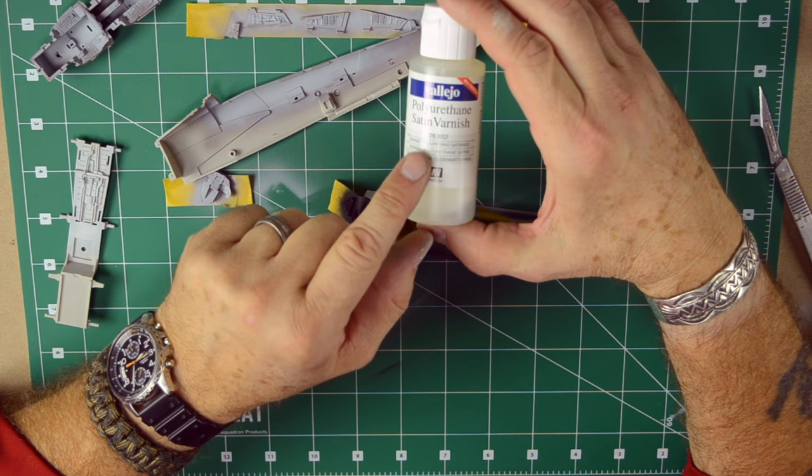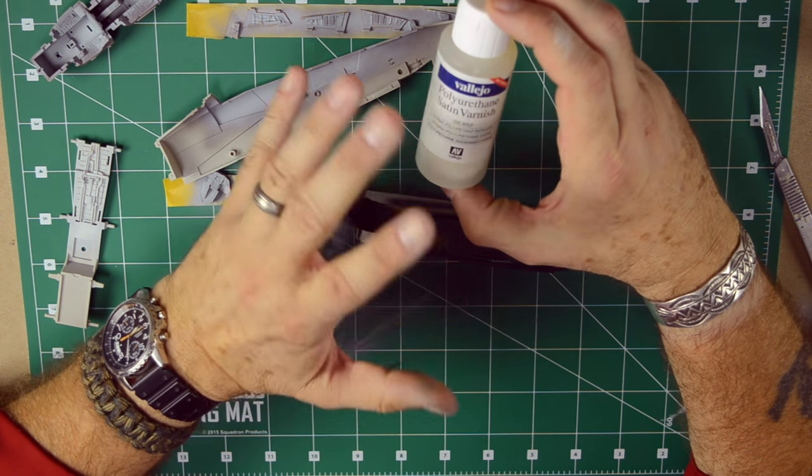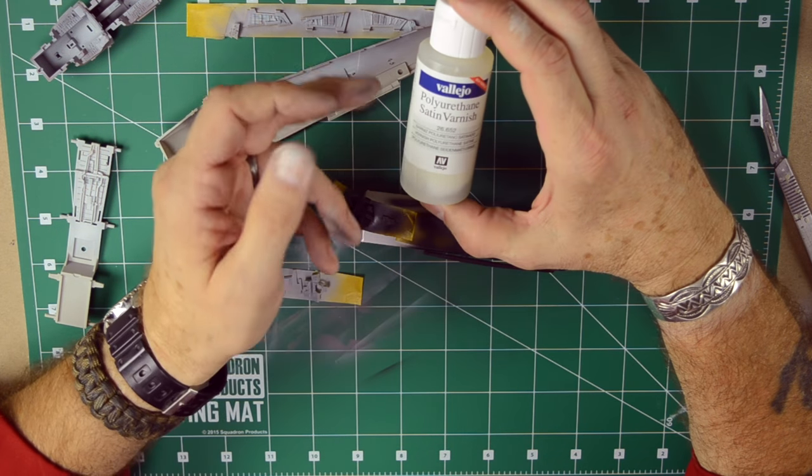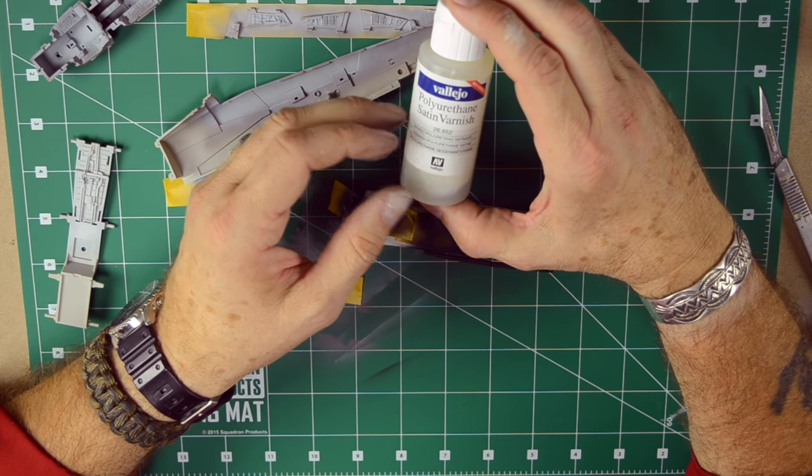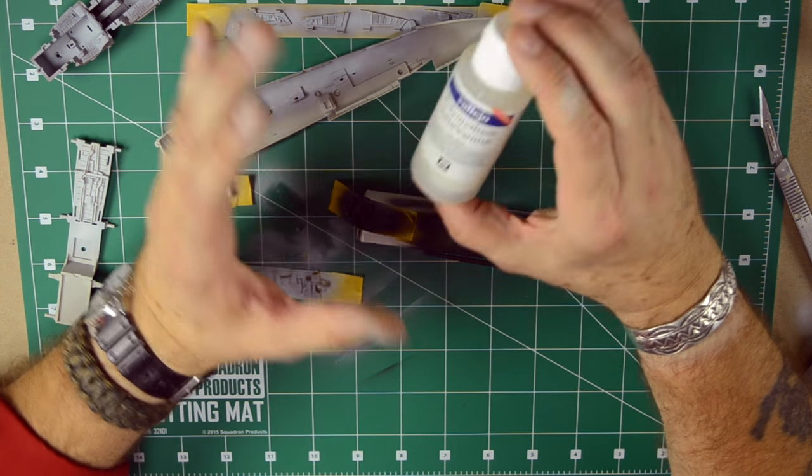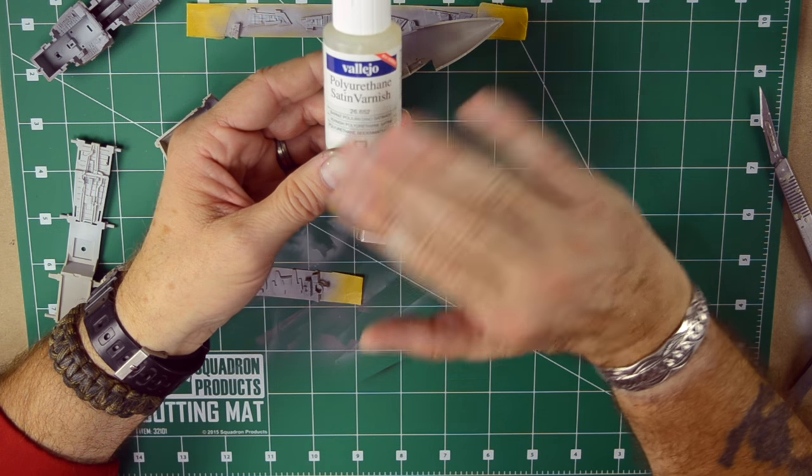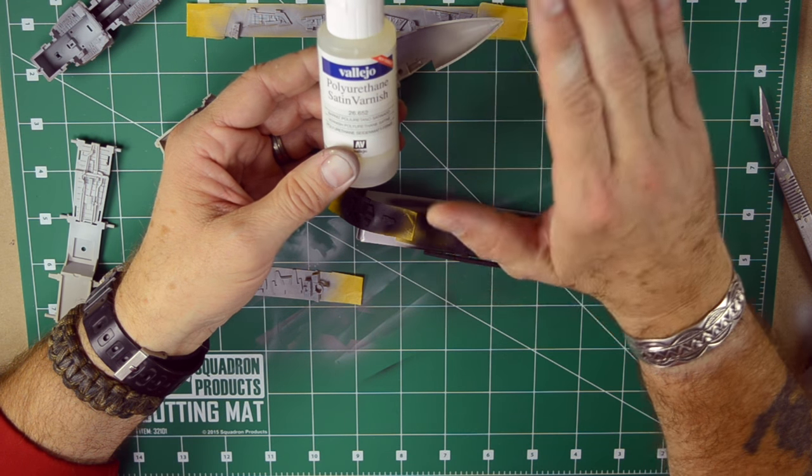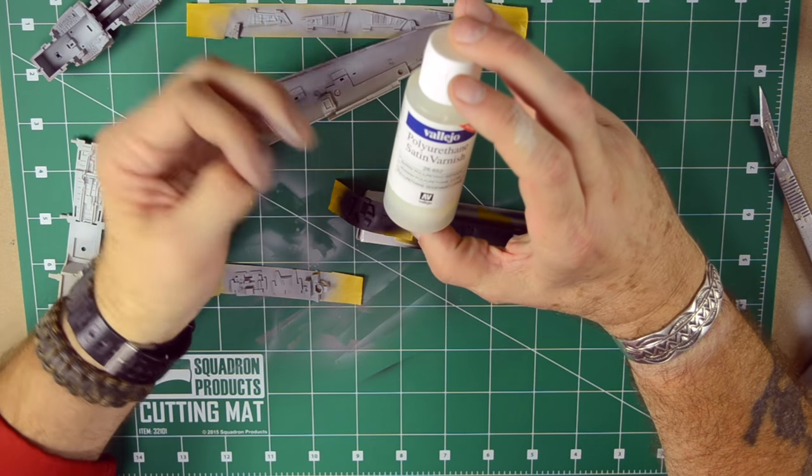I like to clear coat everything with Vallejo Polyurethane Satin Varnish. Now, this product is very, very good. It's the best on the market as far as a clear coat. They have it in satin. They have it in flat. And they also have it in gloss. I'm only familiar with the satin varnish. This will give you a nice smooth top coat or clear coat. And if you wait about 24 hours or even a little bit more, you're pretty safe. You can do most anything on it and it won't come off. Also a good investment.